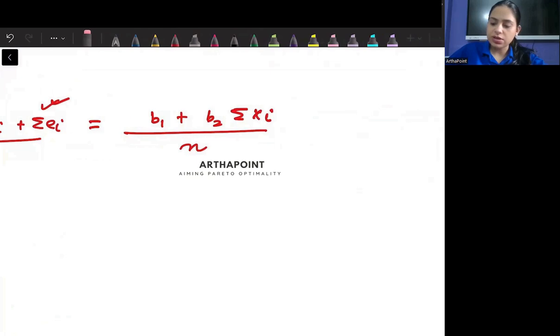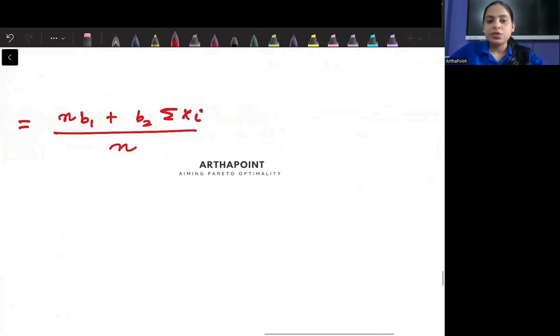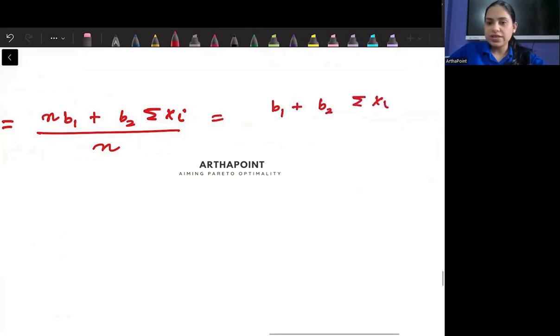So this would have given you b1 plus b2 summation xi by n and this would have been b1 plus b2 x bar.